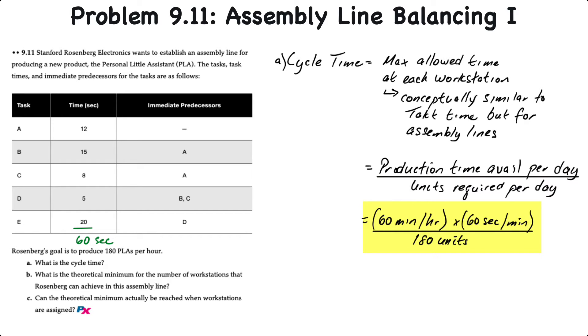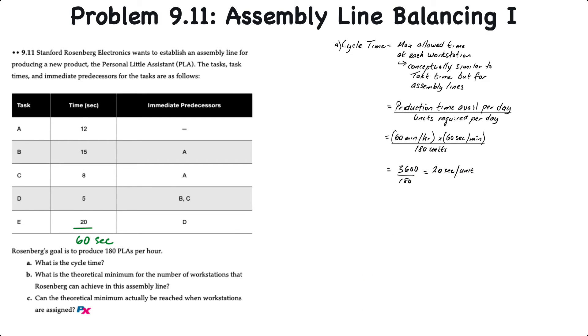In the numerator, we have 60 minutes per hour, and there's 60 seconds per minute, and we'll divide that by 180 units that are required. So that equals 3600 seconds divided by 180, which is 20 seconds per unit. We want to convert this problem to seconds because the task times are given in seconds.